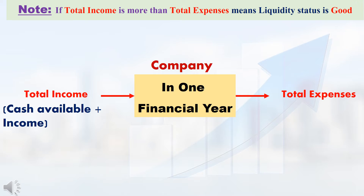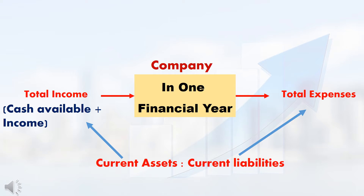In any company, if the total amount to be received in this financial year is higher than the total expenses in this financial year, then that company's liquidity status is good — that company will not face any money problem. Here, current liabilities is the company's total expenses in this financial year. Current assets is the total amount receivable by a company in this financial year.